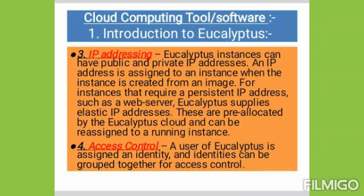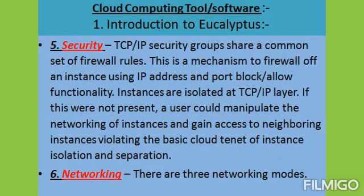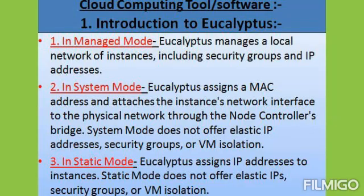The next terminology is security. All security groups share a common set of firewall rules. This is a mechanism to firewall an instance using IP address and port block or allow functionality. Instances are isolated at the TCP/IP layer. If this were not present, a user could manipulate the networking of instances and gain access to neighboring instances, violating the basic cloud principle of instance isolation and separation.